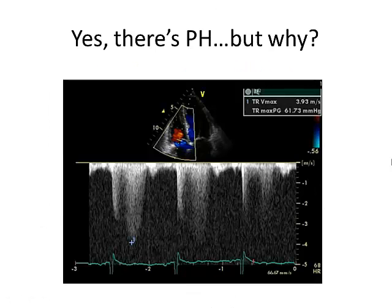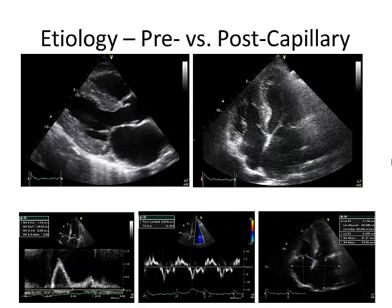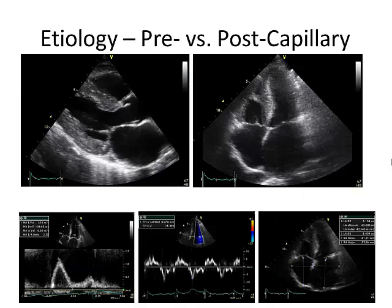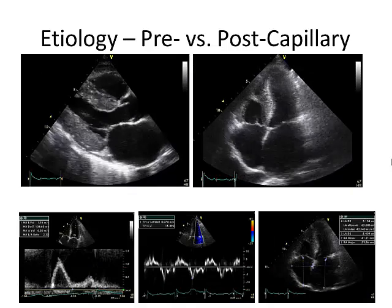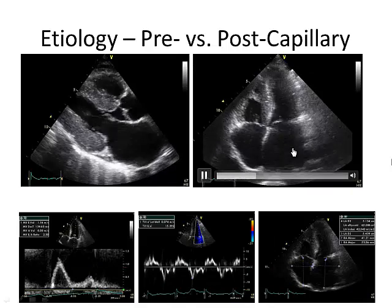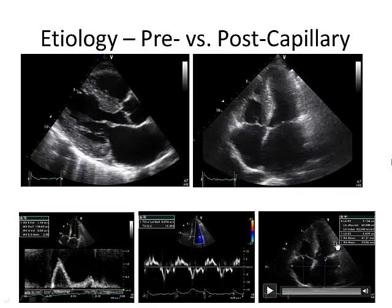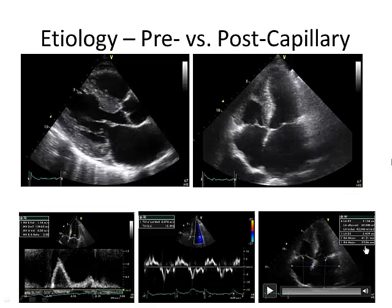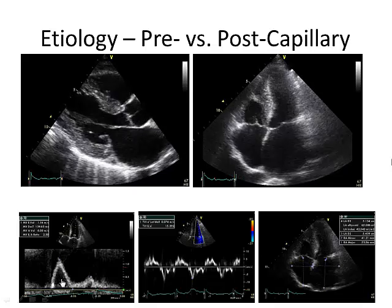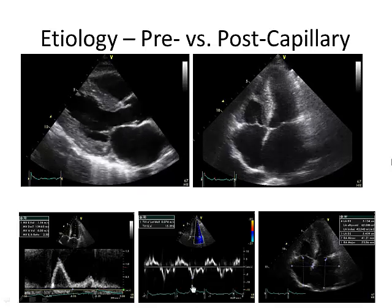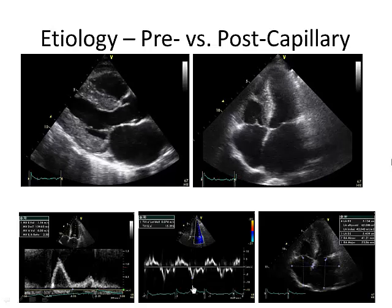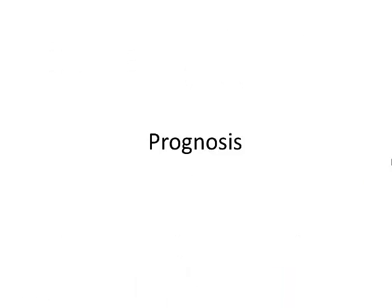Echo adds a whole other layer. Here's a patient with a PH pressure of 80 — you can ask, of course there's PH, but why? You can see significant concentric left ventricular hypertrophy with thickened walls, a dilated left atrium with a volume of 42 mL/m² — severely enlarged. Using transmitral and tissue Dopplers we get an E/E prime ratio. This is clearly left-sided pulmonary hypertension.